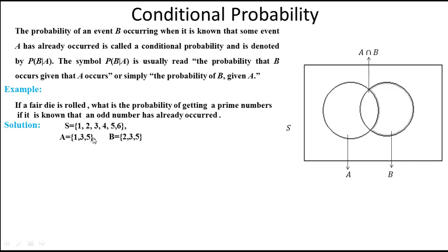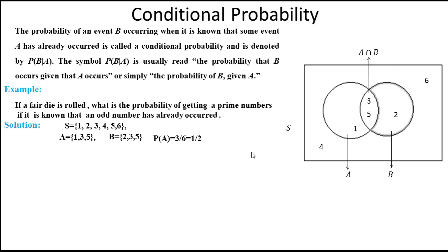All outcomes are placed accordingly in this Venn diagram. One, two, three, four, five, and six are in the sample space rectangle. One, three, five are in circle A representing the odd numbers. Two, three, five are in circle B representing the prime numbers. Three and five are in the intersection of A and B.